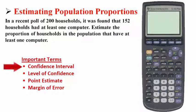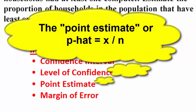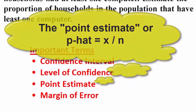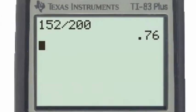To consider this problem and looking at the important terms we spoke of earlier, we are asked to find a confidence interval. If we would like to calculate the point estimate, that means we need to find what 152 divided by 200 is equal to. We see that 152 divided by 200 is 0.76.